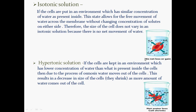Now the next kind of solution is the isotonic solution, and you can easily see that there is no net loss or gain of water in this case. So if cells like RBC are put in an environment which has a similar concentration of water as present inside, there will be no net movement of water either inside or outside. The water can move in both directions but there will be no net movement, and the size of the cell will remain the same. There will be no change in concentration of the solutes on either side.